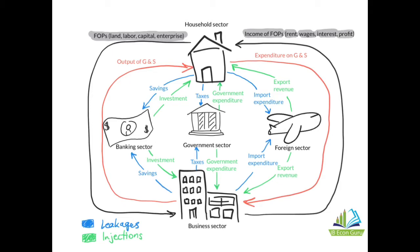What does the business sector do with these factors of production? They use them as inputs to produce output of goods and services. The factors of production flow from the household sector to the business sector, and the output flows back from the business sector to the household sector. Households then take the income received from selling factors of production and spend it on goods and services, so this expenditure comes back to the business sector.